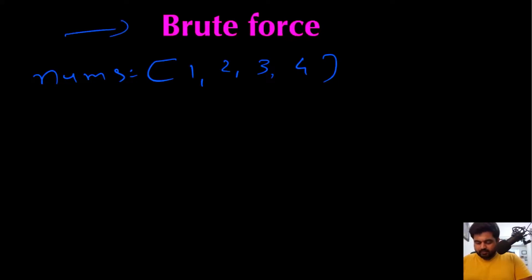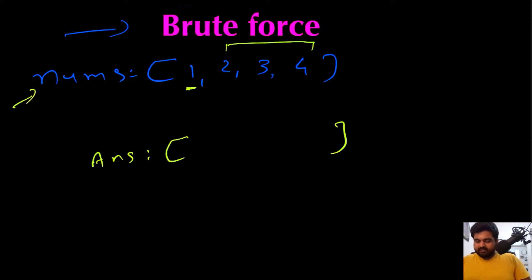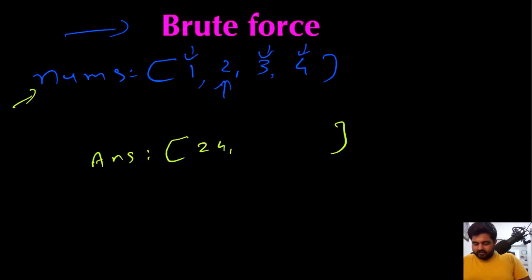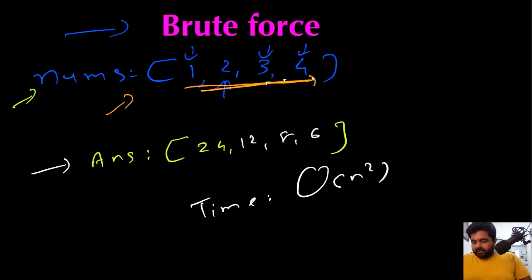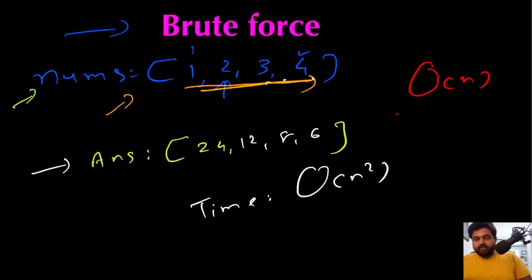The most basic brute force approach is to take each element, iterate over all remaining values, compute their product, and store it in the answer array. This gives the correct answer — for the first element we get 24, for the second we get 12, and so on. However, the time complexity is O(n²) because for every element we iterate over all other values again to find their product. We are explicitly told to solve this in O(n) time, so let's see how to achieve that.